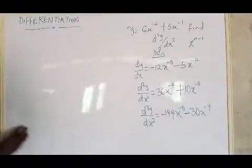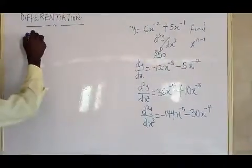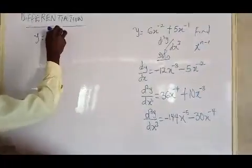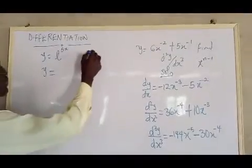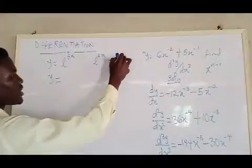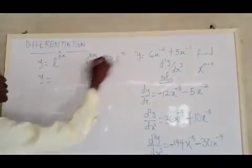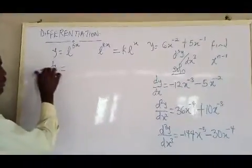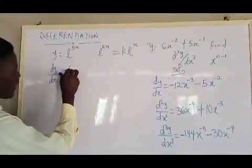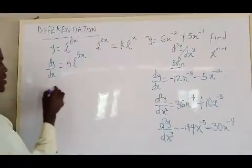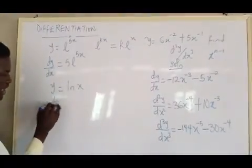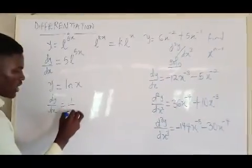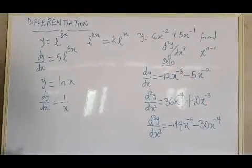Let's look at one last question on exponential functions — how to differentiate them. If you have y = e^(5x), the rule is that if you differentiate e^(kx) it gives k·e^(kx). So dy/dx becomes 5e^(5x). Also, if you have y = ln(x), your dy/dx will be 1/x. That is how you differentiate exponential and logarithmic functions.